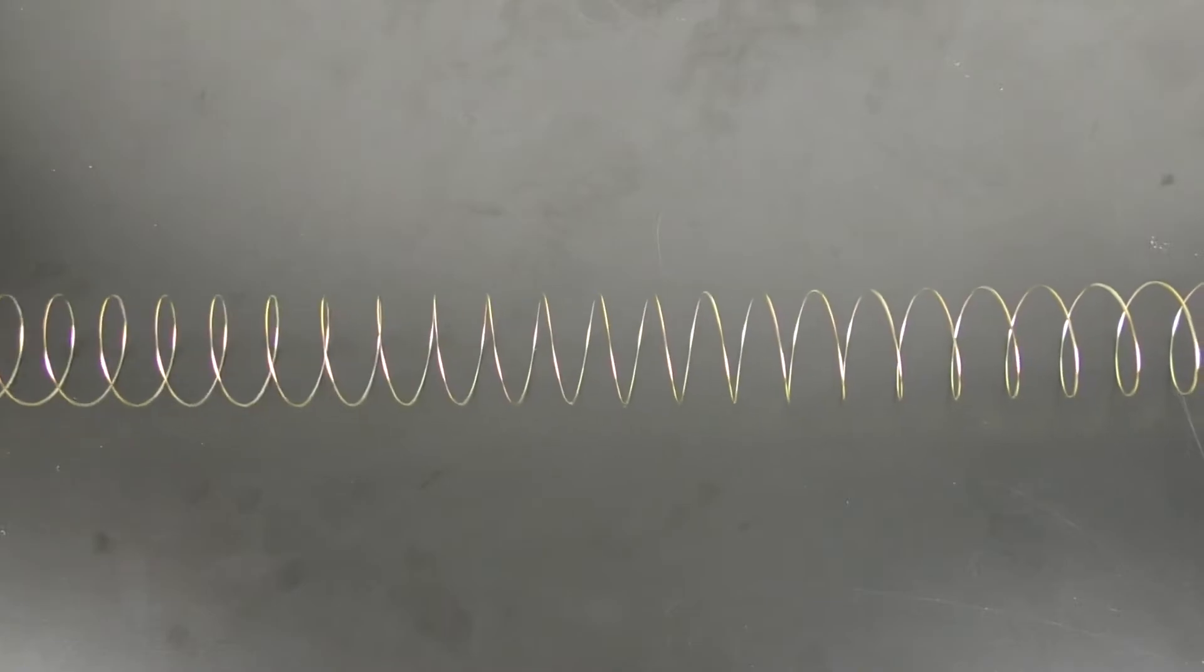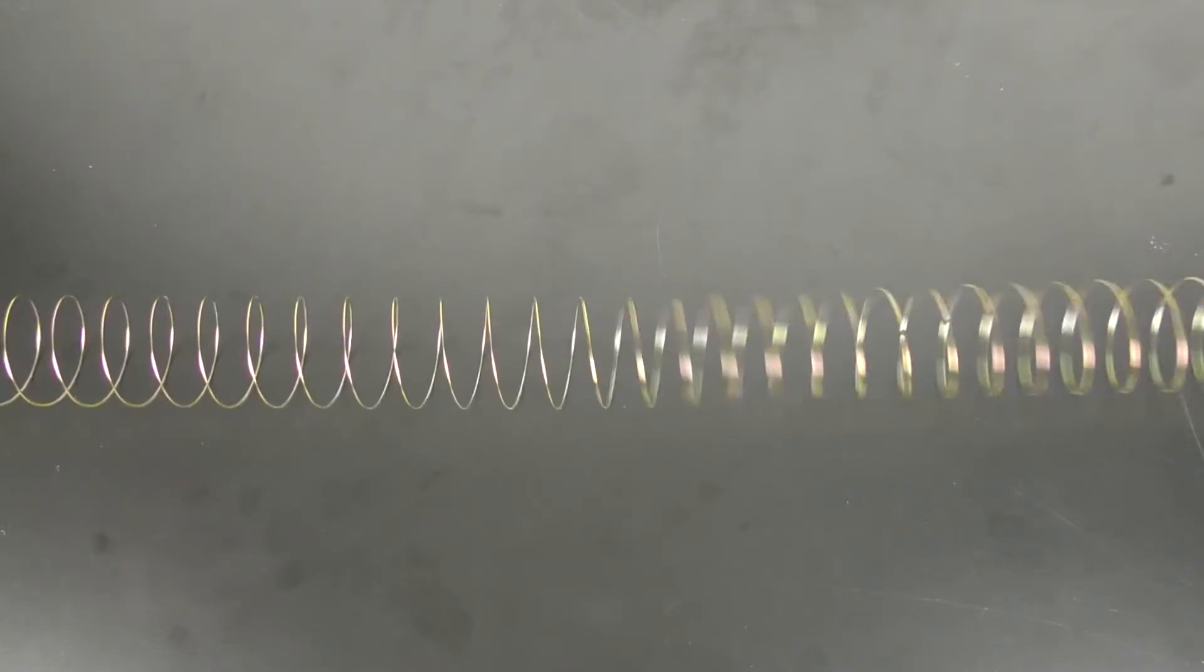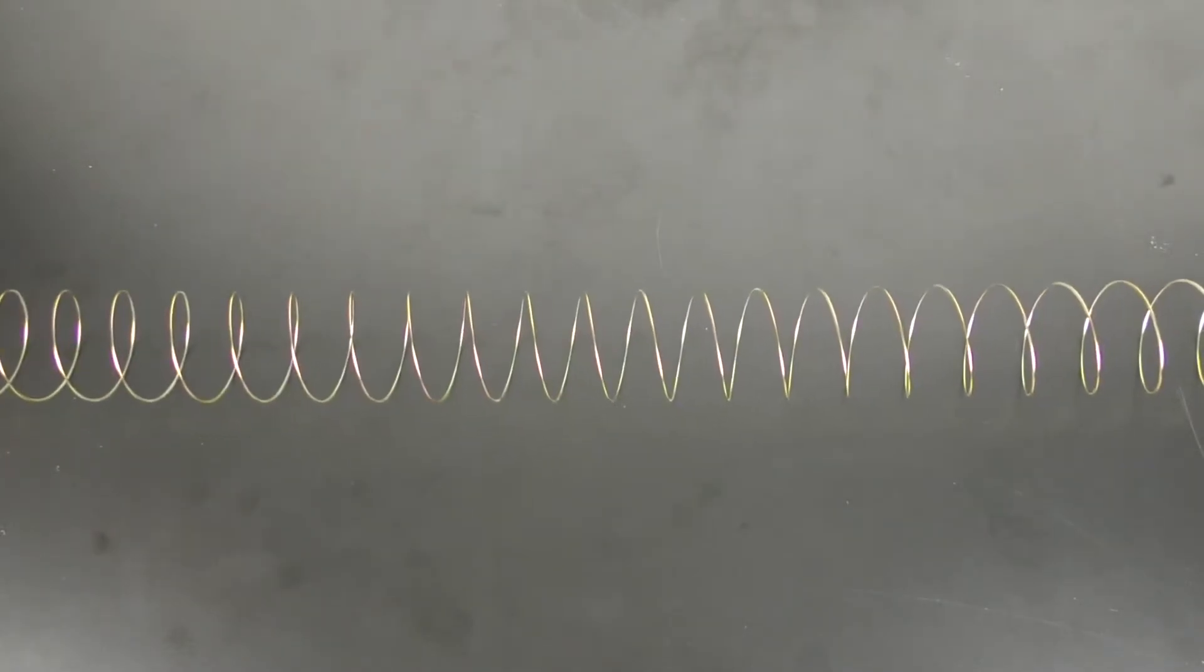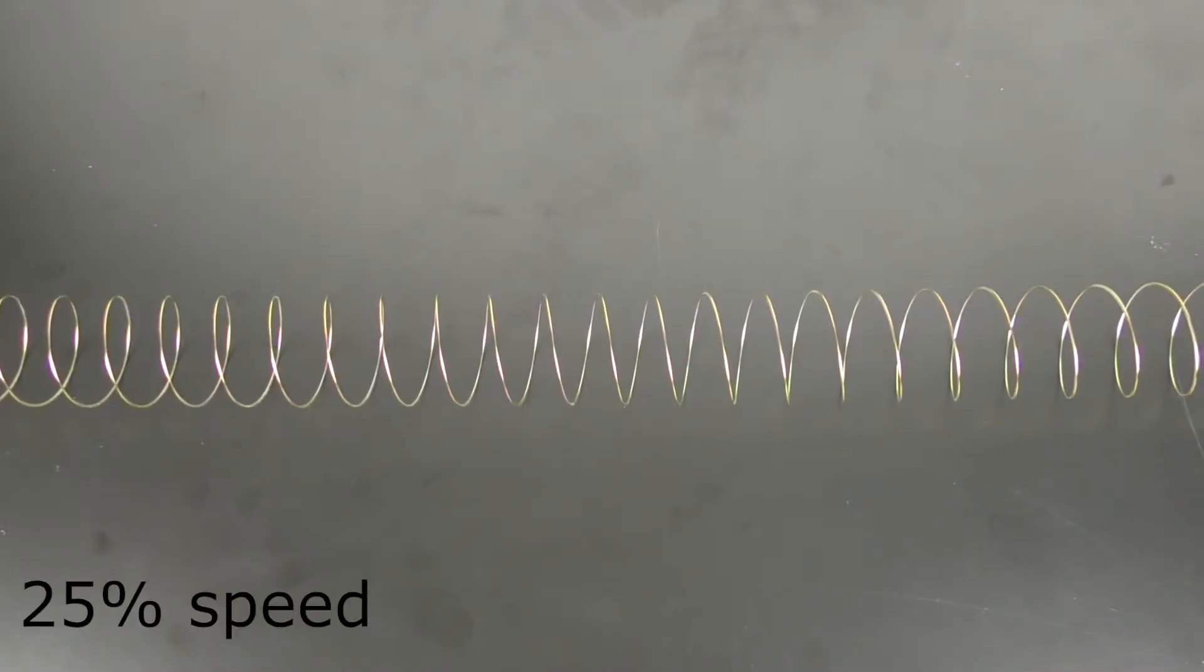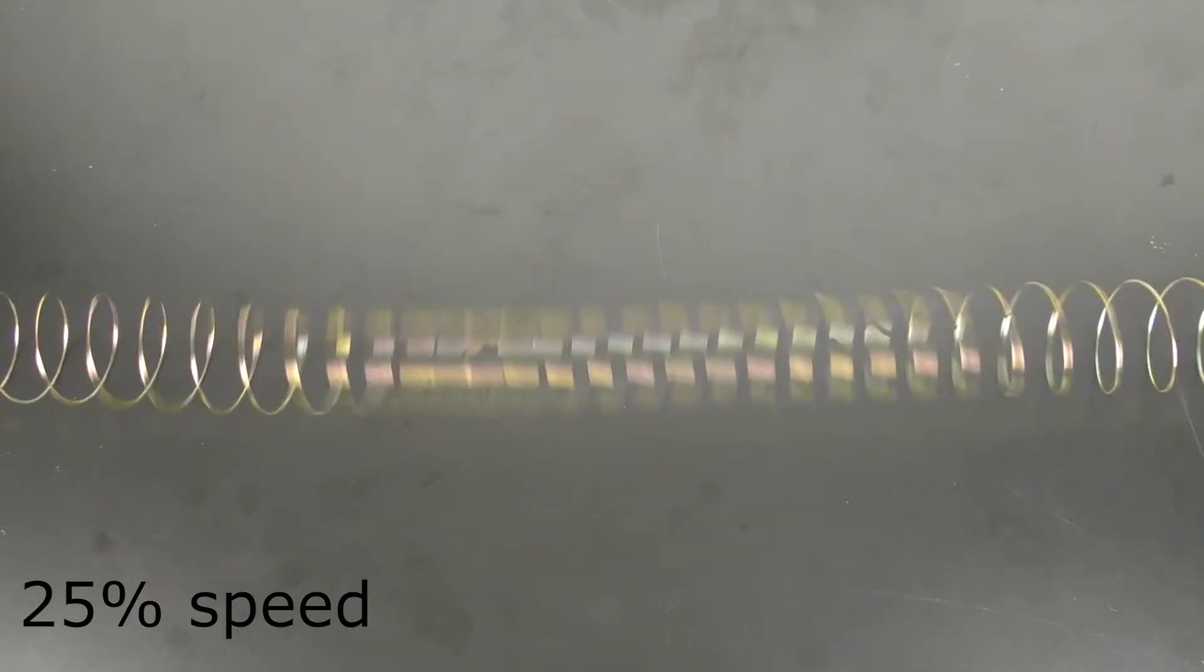To do this, you would pull the slinky back, compress some coils, and then release them. If the students look closely, they can see the compression going down the length of the slinky.